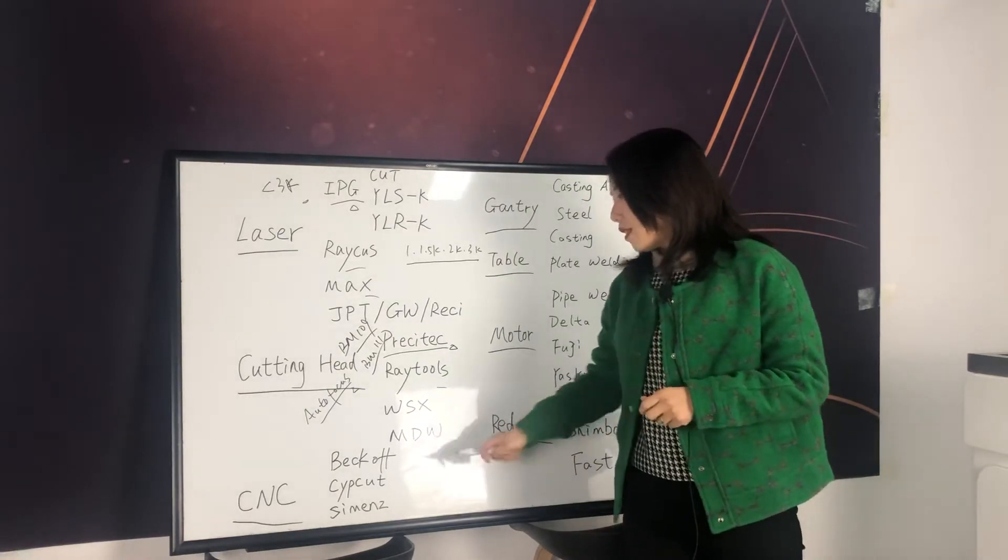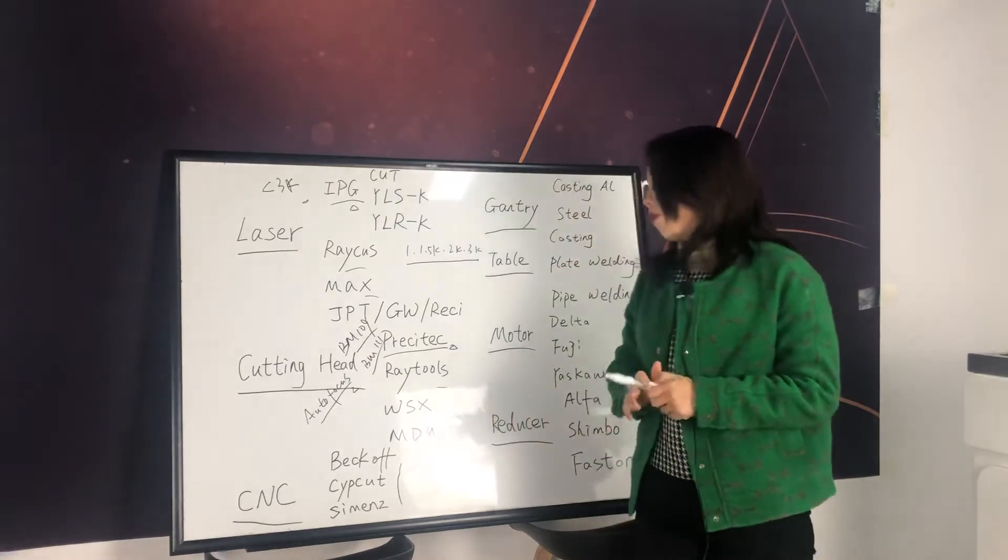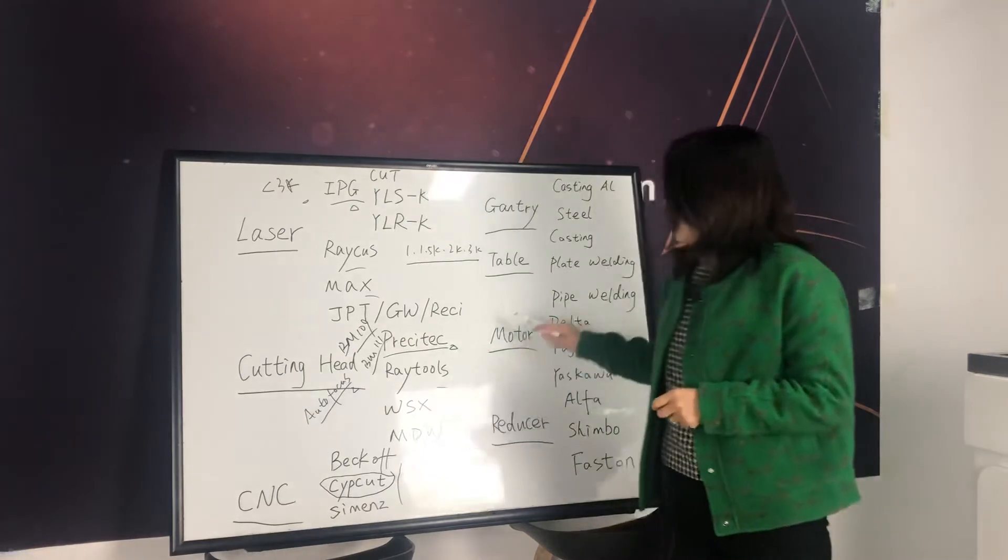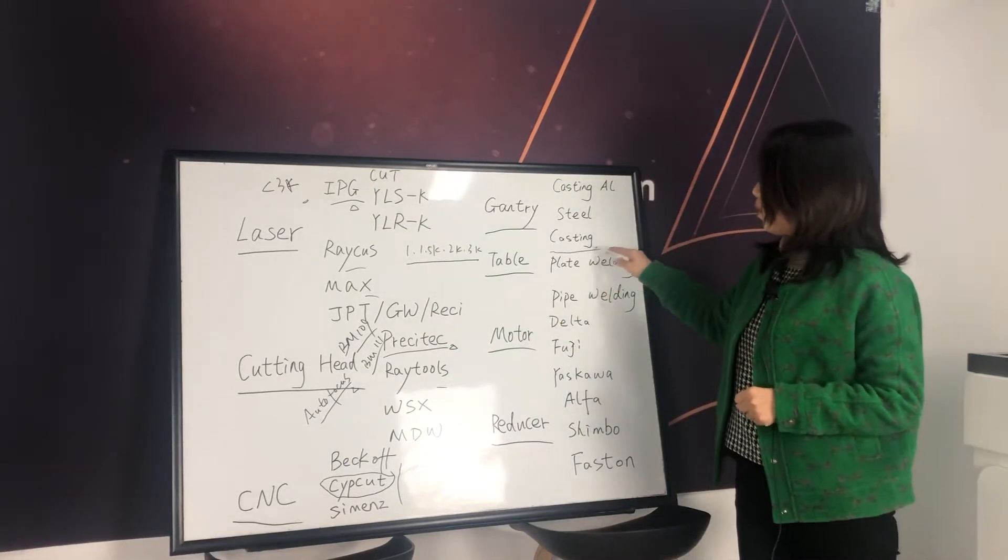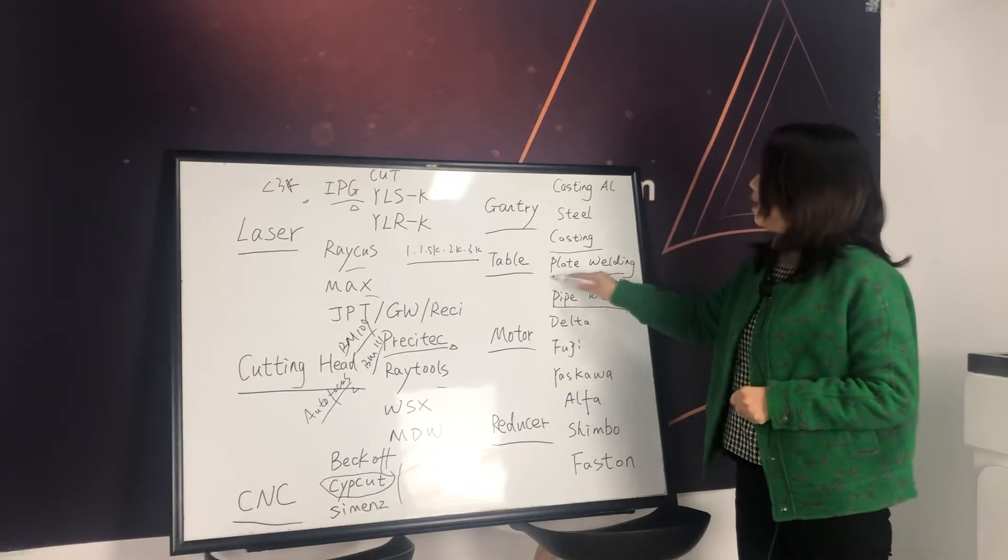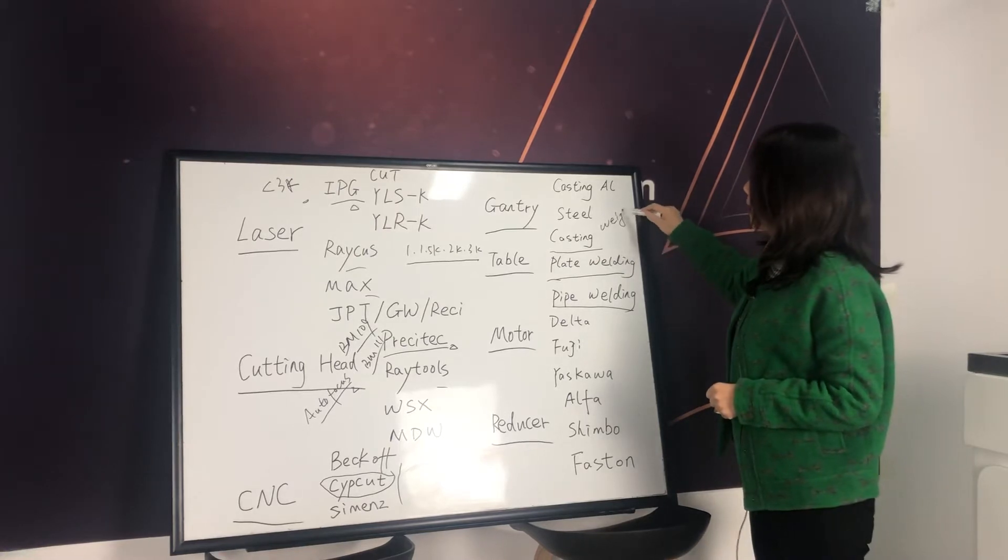So for CNC, we have Beckhoff, Cypcut and Siemens. Of course, for entry level, we use Cypcut mostly. And for gantry and table, we have casting table. We have plate welding and pipe welding. They have different weight. They have different design and different weight.